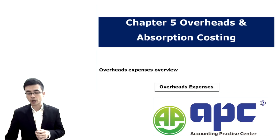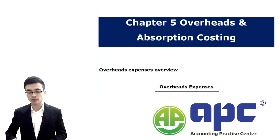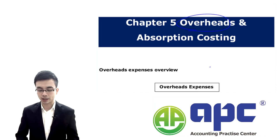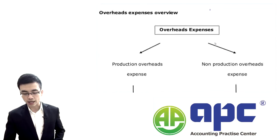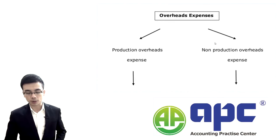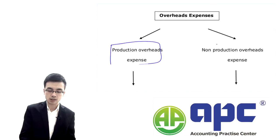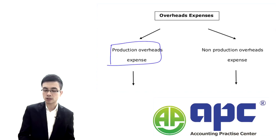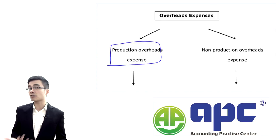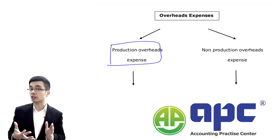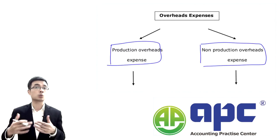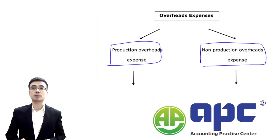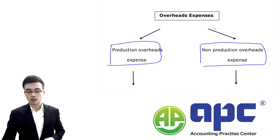The overhead, meaning the total indirect cost, will include either production overhead expenses — the overhead expenses within the factory — or non-production overhead expenses, which are the overhead expenses outside the factory.